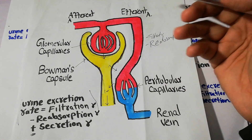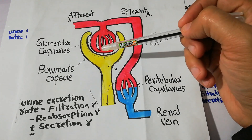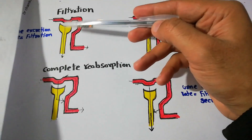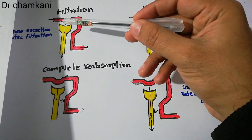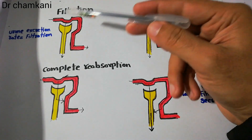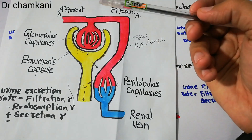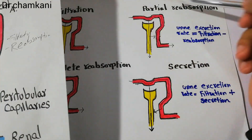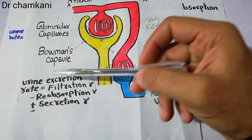We have discussed the structure of the nephrons and renal tubules in detail in previous lectures. Once the filtrate starts moving, there are changes that occur in its composition. Depending upon the three main steps — filtration, reabsorption, and secretion — the urine excretion rate is determined.